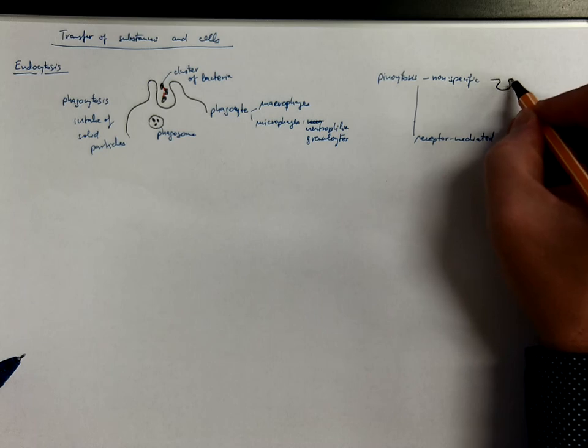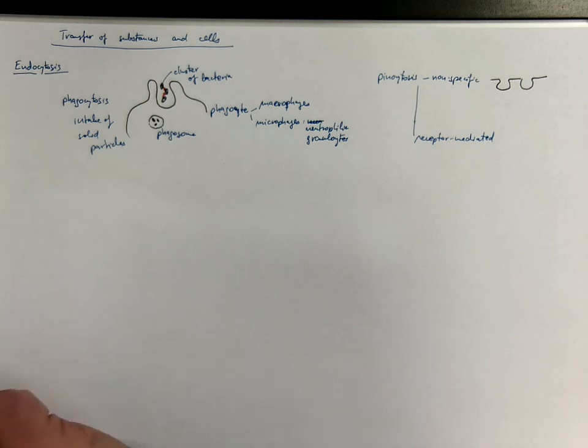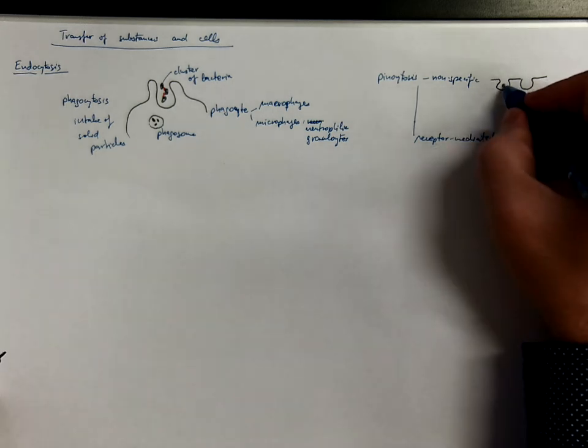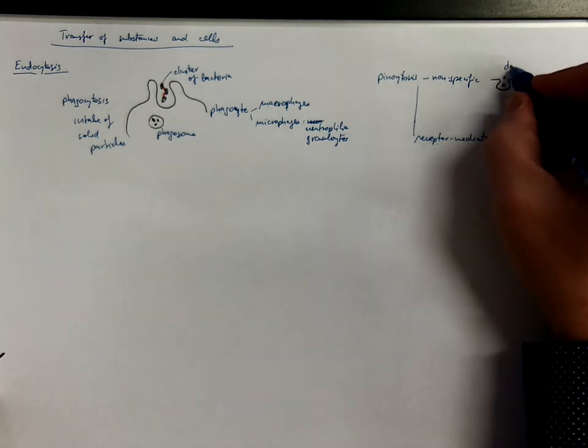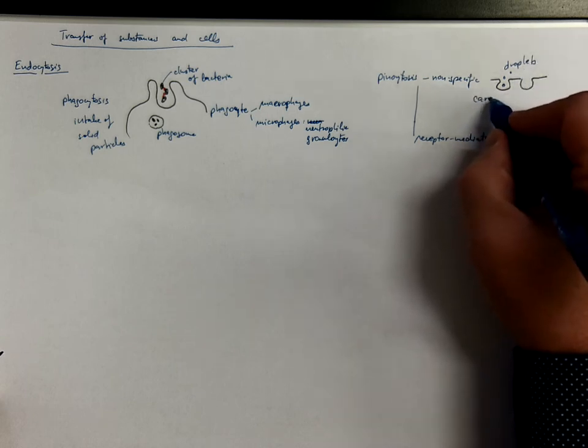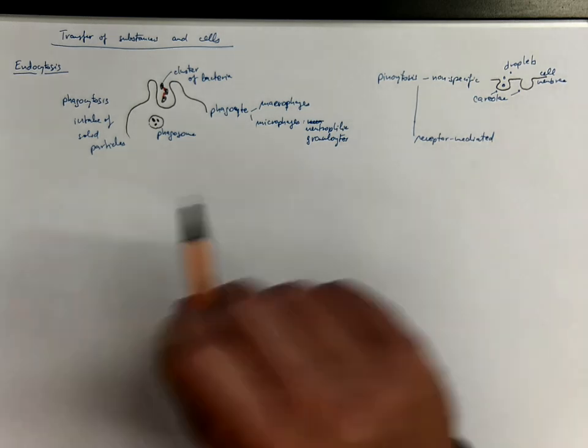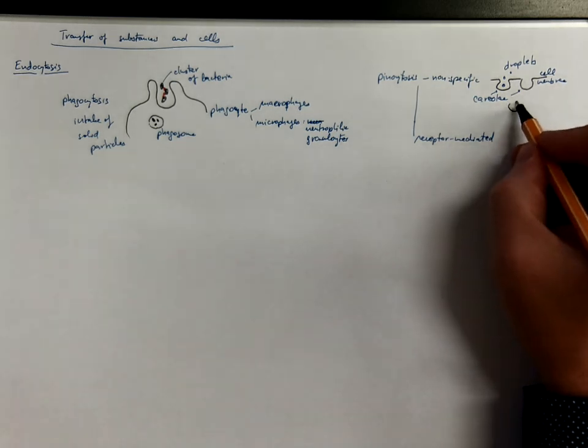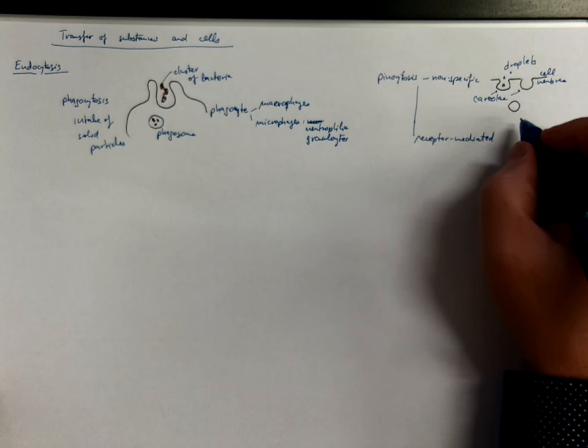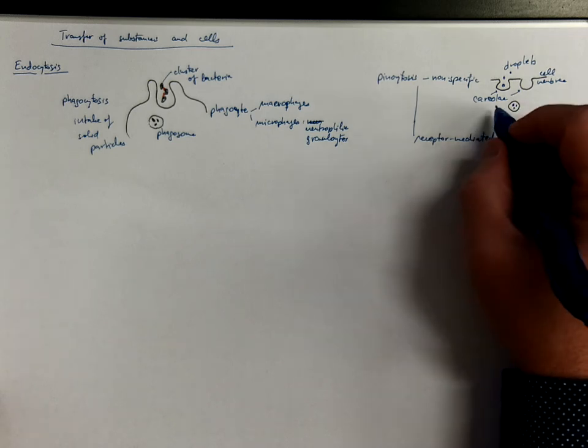It involves formation of the so-called caveolae on the cell membrane. Here it can be various droplets. This is the cell membrane, and after ingestion, the droplets appear inside in a temporary organelle called caveosome.